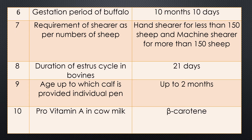Question ten: Pro vitamin A in cow milk — what is its name? Pro vitamin A, or precursor of vitamin A, is called beta carotene. Beta carotene is also known as pro vitamin A, and its color is yellow. So it imparts a yellow color to cow milk. Beta carotene is absent in buffalo milk. In buffalo milk, directly vitamin A is present, so the milk of buffalo is white in color.